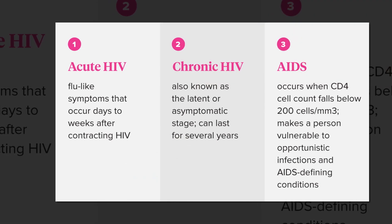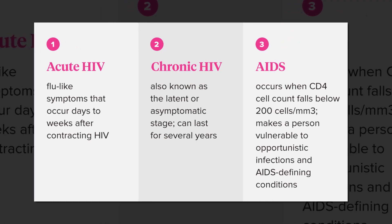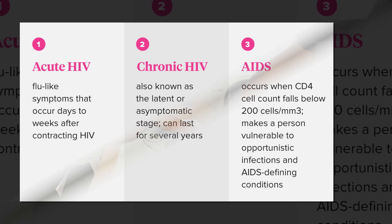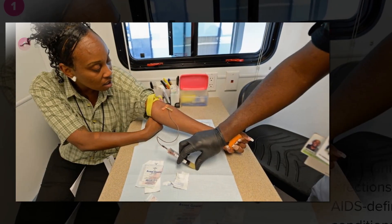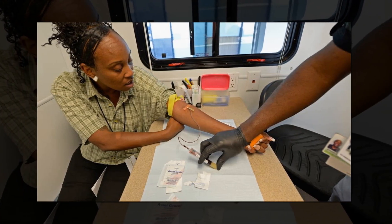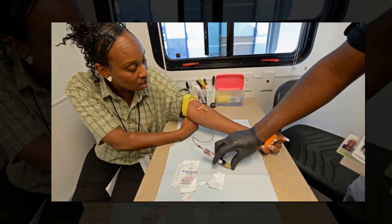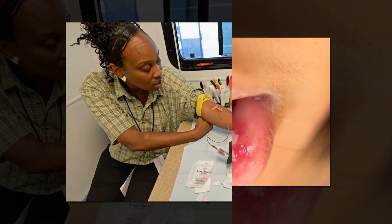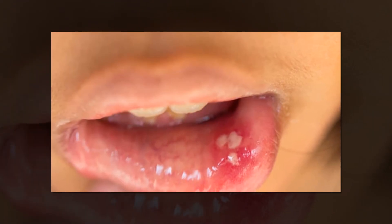How does HIV affect the tongue? Because many conditions that affect the tongue in people living with HIV are not always painful, they can be easy to miss. Signs and symptoms vary, but may include candidiasis — white or creamy patches on the tongue and inside the mouth and throat.